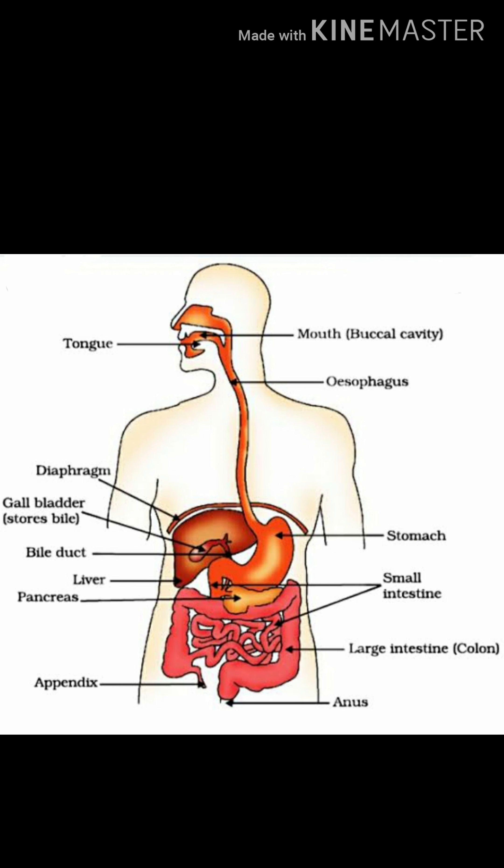The organs are: tongue, mouth — also called the buccal cavity — esophagus, stomach, bile duct, gallbladder, liver, pancreas, small intestine, appendix, large intestine, rectum, and the anus.